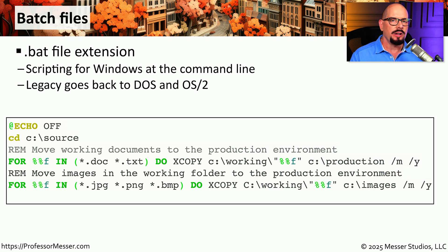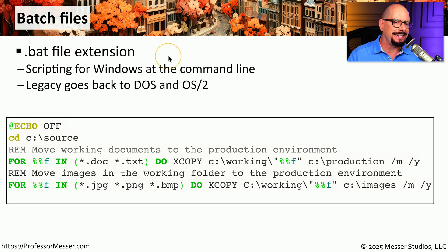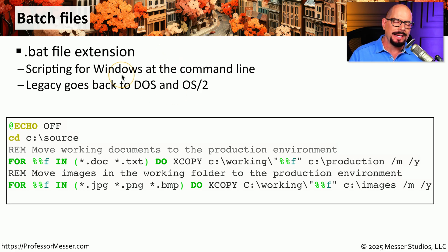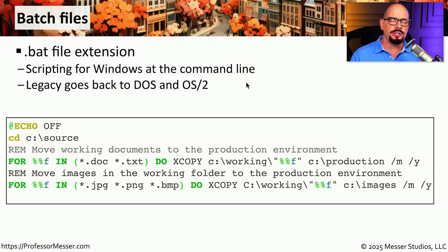If you're running an automated task in Windows, you could be running a batch file. You'll know this because the name of the file has a .bat file extension. This is something that you'll run at the command line inside of Windows. The use of batch files goes back to DOS and OS/2, which means you have decades of documentation that can help you build a batch file to automate processes inside of your Windows system.